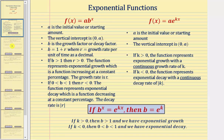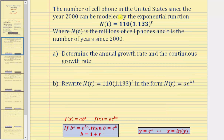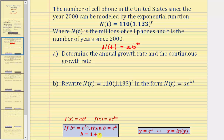Let's look at an example. We're given a function that models the number of cell phones in the US since the year 2000, where n of t is millions of cell phones and t is the number of years since 2000. We're asked to determine the annual growth rate and the continuous growth rate. The given function n of t is in the form a times b raised to the power of t, so by analyzing the base b, which equals one plus r, we can determine the annual growth rate — but we need additional calculation to find the continuous growth rate, which is the value of k.